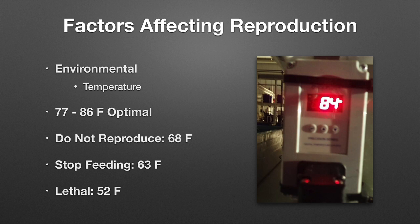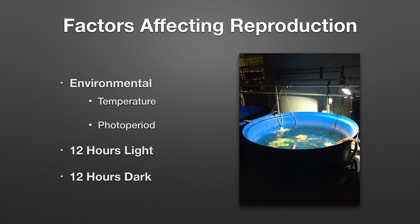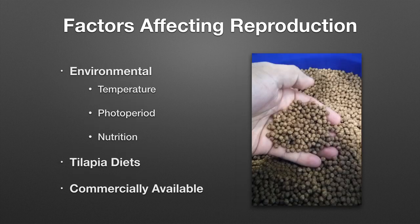There are five factors that affect reproduction. One of the most important is temperature. For Nile tilapia, the optimal temperature range is 77 to 86°F — personally I prefer 85°F. They will not reproduce at 68°F, they stop feeding at 63°F, and they die between 48 to 52°F. A second important factor is photoperiod. In our experiments we used an automated lighting system providing 12 hours of light and 12 hours of dark. A third major factor is feeding fish with adequate nutrition; for tilapia these diets are commercially available.